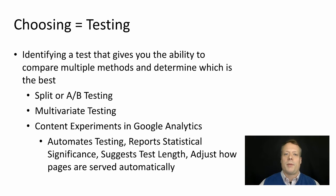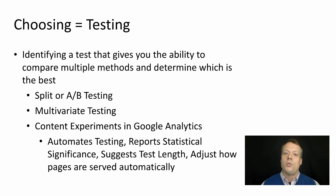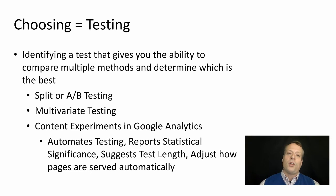We're going to start with choosing, because it's probably one of the most difficult concepts to understand. Digital marketing has really been revolutionized by the idea that we can now test everything. Rather than doing a bunch of research ahead of time, one solution is that if we don't know which item someone's going to prefer, we can present a group of people with both options, let them choose, and use that to make decisions about future efforts. Choosing in the optimization framework is really about identifying a test that gives you the ability to compare multiple methods — multiple means of communicating your message to consumers — and determining which is best.